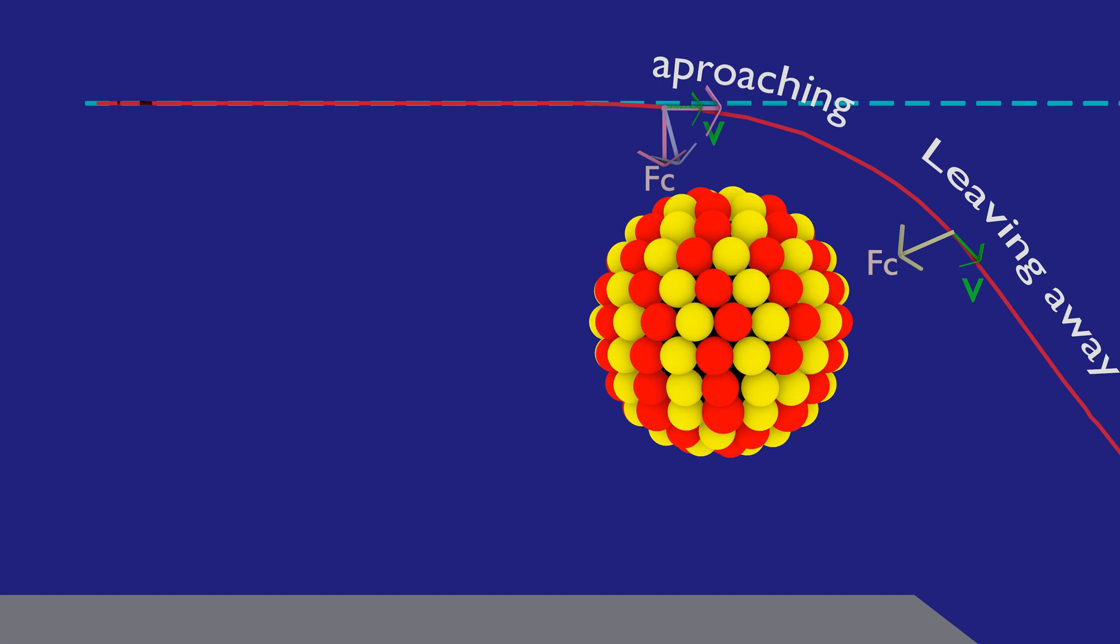If you analyze the path of electron in the vicinity of nucleus, the electron will first get close to the nucleus and then move away from the nucleus. The other component of coulombic force will be along the direction of motion while the electron is approaching the nucleus.